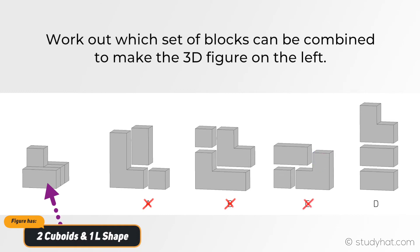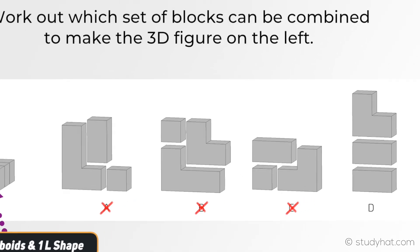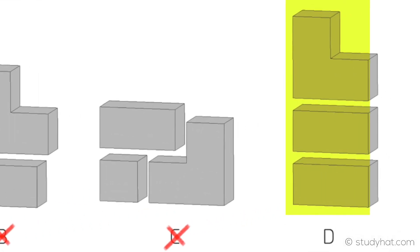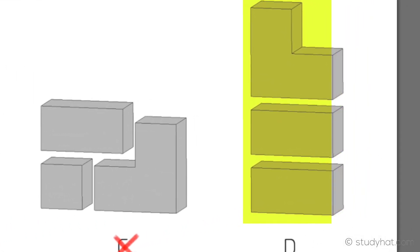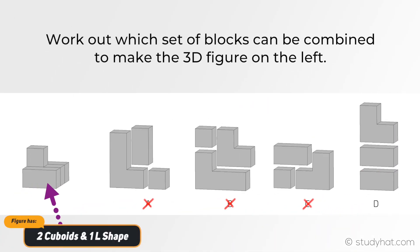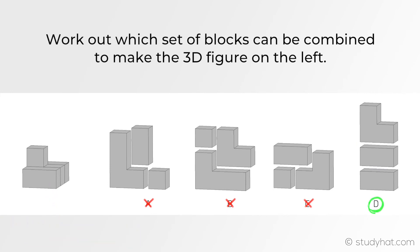That leaves us with figure D. Let's check if this is the correct answer. It has two cuboids, and then one L shape figure which is placed in the middle, so D is the correct answer.